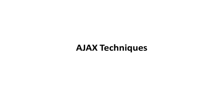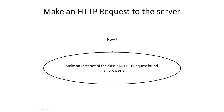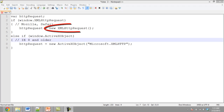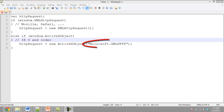Let's do some basic AJAX techniques with the help of the above-mentioned technologies. We will start by making an HTTP request to the server using JavaScript. For that, we need to make an instance of the class XMLHTTPRequest found for all the web browsers. In case of Microsoft Internet Explorer, the similar method exists in an ActiveX object called XMLHTTP.